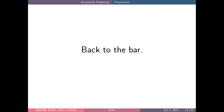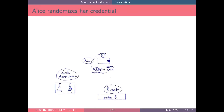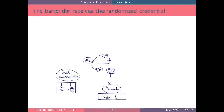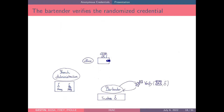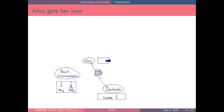Back at the bar, when Alice wants to prove that she is over 18, she takes this credential and randomizes it — that is, she adds some random elements to the credential. From the bartender's point of view, the credential is equivalent to a brand new credential that was just issued by the French administration and was never used. Alice gives this credential to the bartender, who verifies it using the public key of the French administration, and because the credential is valid, Alice can get her beer.